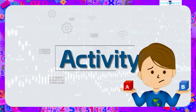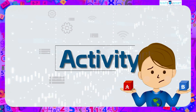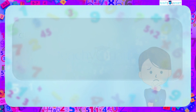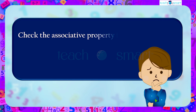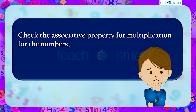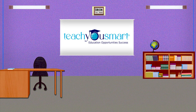Before winding up, let's check how much you understood by doing an activity. Check the associative property for multiplication for the numbers A = 12, B = 9, and C = 21. That's all for now — see you all in the next class.